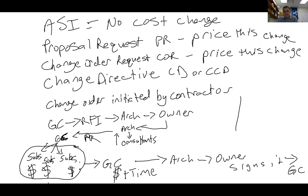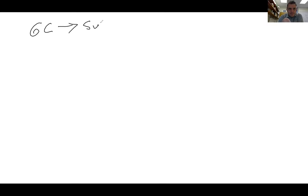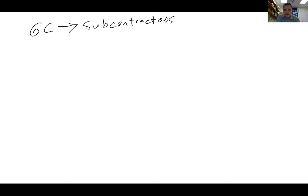The architect sends it to the owner, the owner signs it and sends it to the GC. Once your GC signs it, the general contractor sends signed change orders to subcontractors telling them it's OK to proceed. When compiling all costs, make sure you include overhead costs, tools, equipment, and materials. You don't want to leave anything out of change orders because once that change order is signed, you've agreed that's the price you're going to do it for.